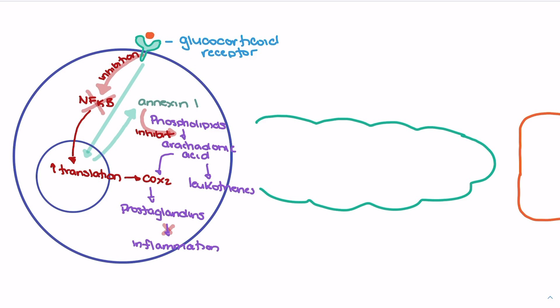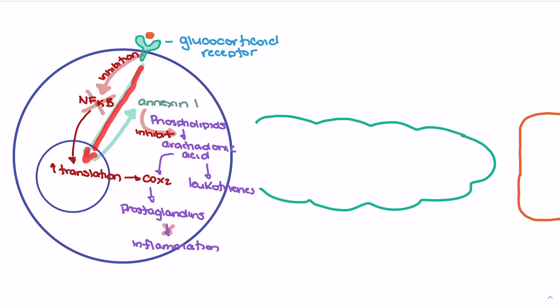To summarize the two anti-inflammatory mechanisms: when hydrocortisone binds to the glucocorticoid receptor, first we get inhibition of NF-κB, which prevents translation of COX-2 and thus reduces progression toward prostaglandins and inflammation. Second, we see activation of annexin-1 translation, and annexin-1 inhibits the movement from phospholipids to arachidonic acid, reducing downstream release of leukotrienes and prostaglandins — and ultimately, inflammation.